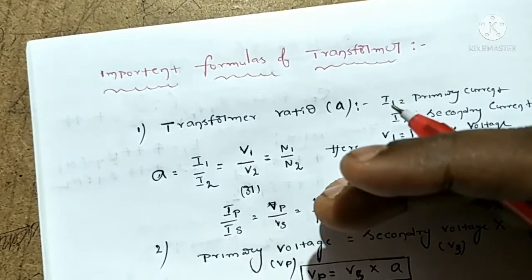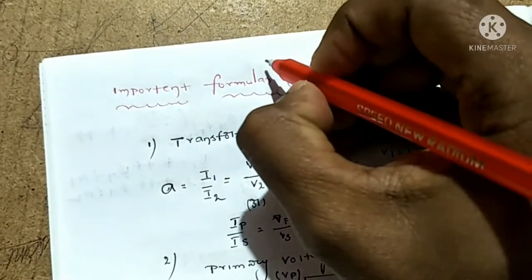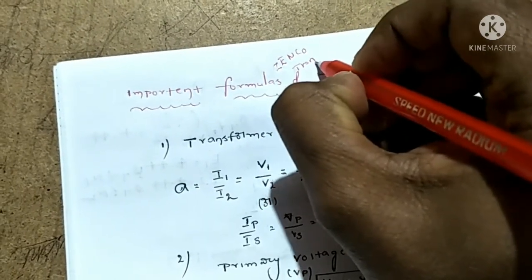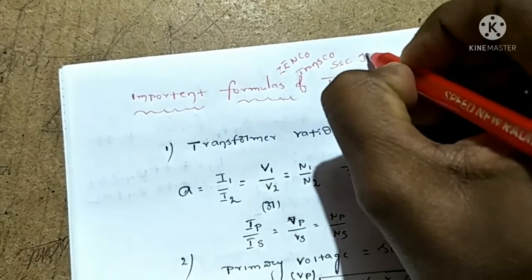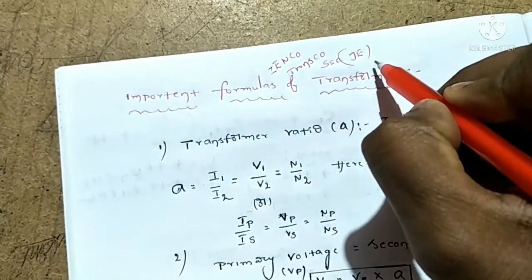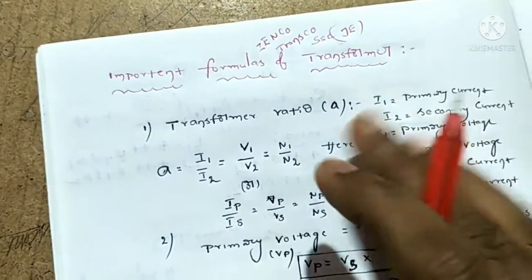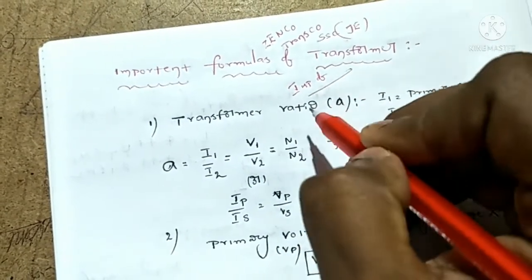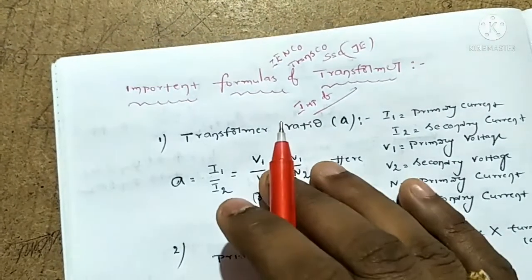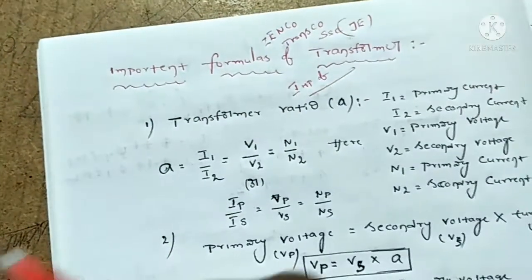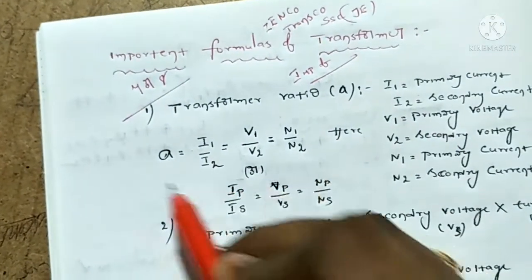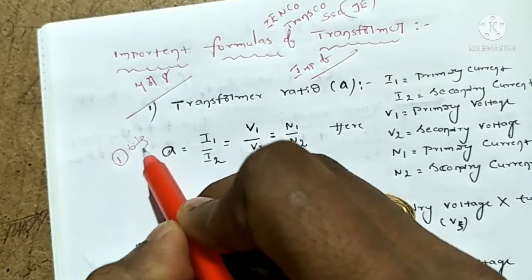We will discuss the transformer topic. Next, there is GenCo, TransCo, and SSCJE exams. This formula is prepared and confirmed for those exams. We will discuss the formulas and questions coming up — the problems, the diploma 4-mark and 8-mark questions. This formula is very important. Next, one-mark questions and one-mark bits are also very important.